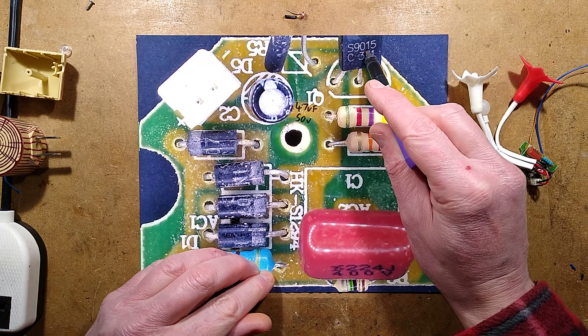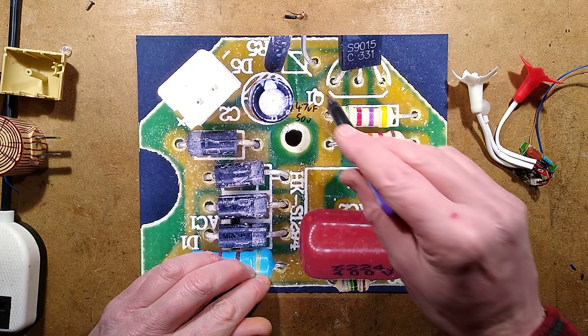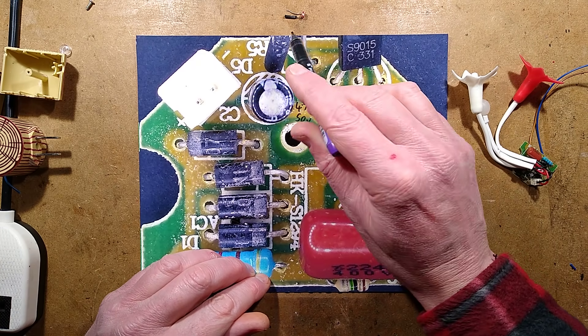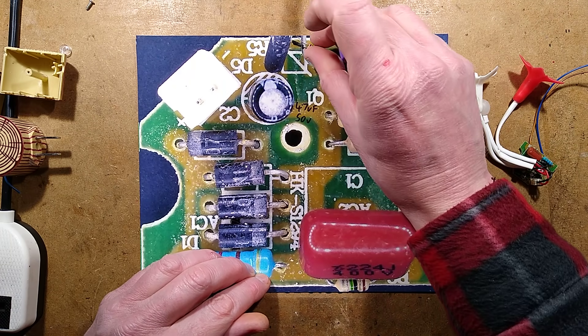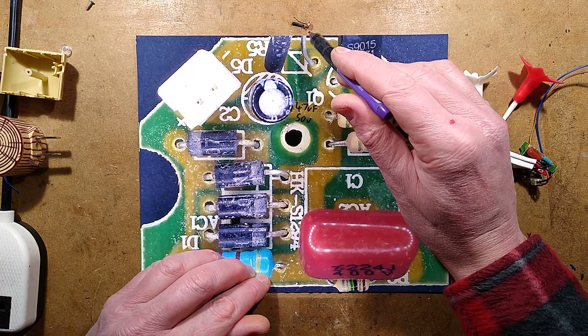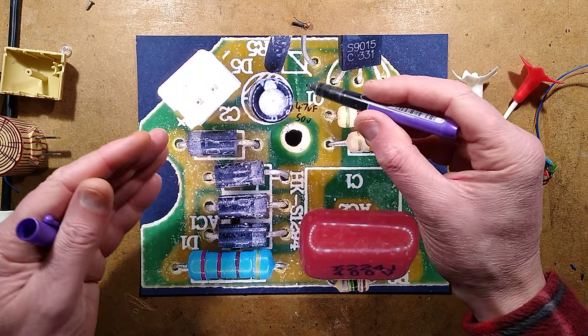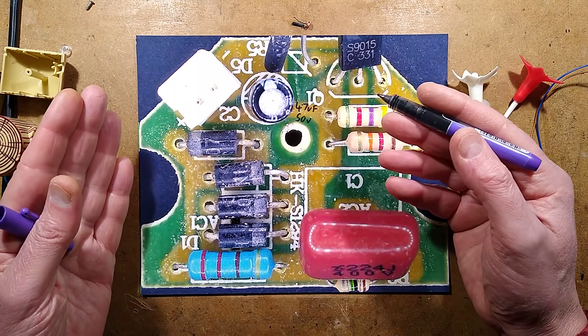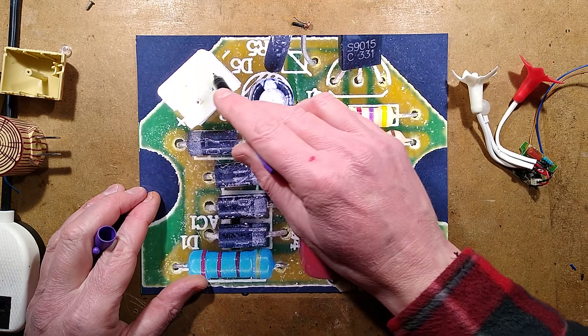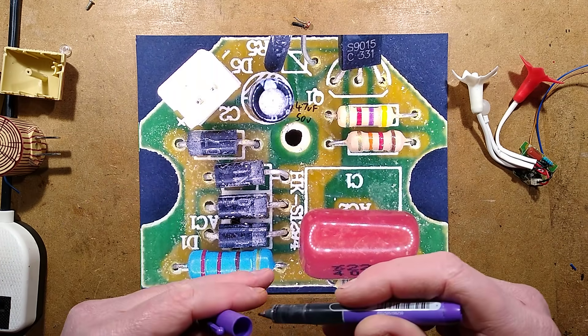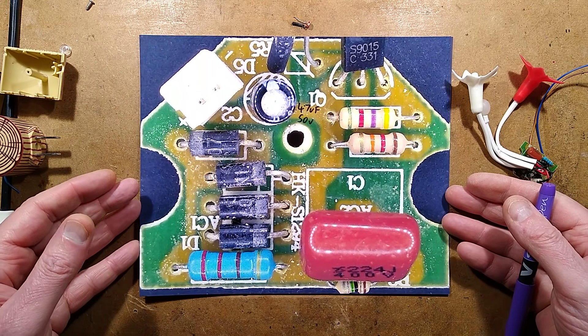There's a little 4.7 microfarad, 50 volt capacitor. There is a transistor S9015, which is a PNP transistor, and then a couple of resistors and the LDR is just off shot here. If you ever want a device with an LDR to come on all the time, just either black it out or just cut it off, and then because it sees a very high resistance, it just thinks it's an LDR in the dark. And other than that, all we've got is the connector for the LEDs.